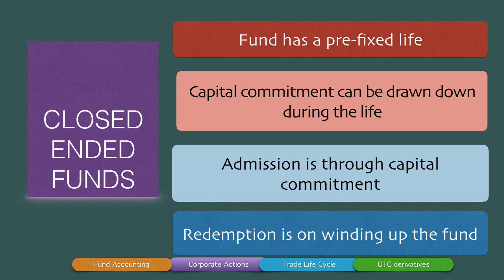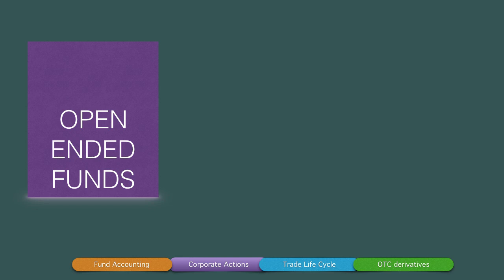The investor gets back the money when the fund is wound up — this is called redemption. So in a closed-ended fund, you have a start date and an end date. Capital commitments happen at the start date; during the period between the start date and the end date, the LPs contribute the capital drawn from the capital commitment and put into the fund. On the end date, the fund is wound up and the redemption proceeds are distributed amongst the partners.